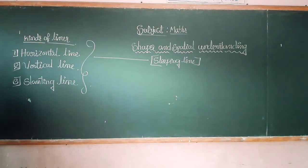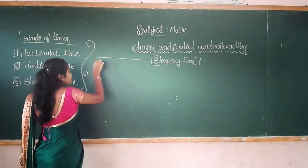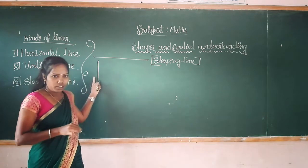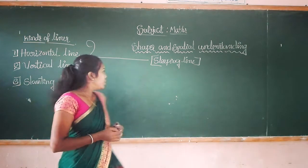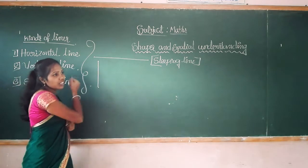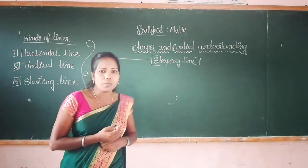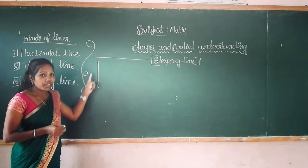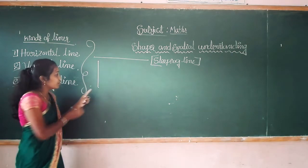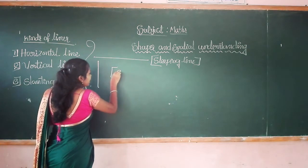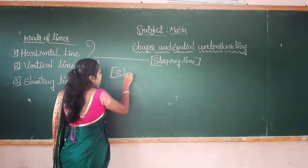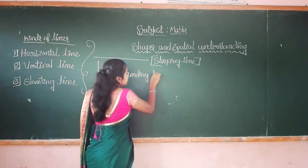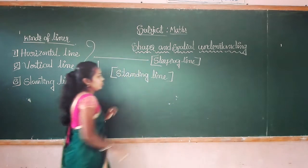What is the next line? Vertical line. Dear students, can you find out the position of this line? The position of this line is standing. That's why we call it the standing line. The last one is slanting line.